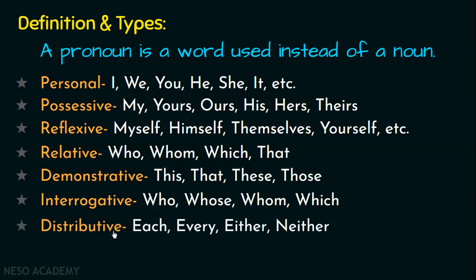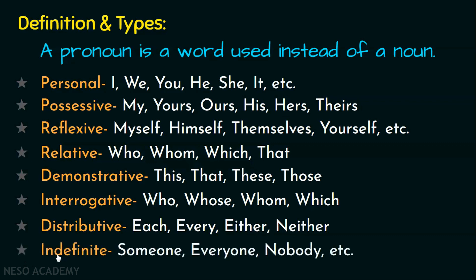The next type is distributive pronouns, and these are each, every, either, and neither. As the name says, distributive, these pronouns are used when you talk about a group and refer to every separate individual of that group. For that reason, they are always taken as singular in their nature. The last type is indefinite pronouns, with examples like someone, everyone, nobody, etc. Since they are indefinite, they do not refer to someone or something in a very specific or particular sense.